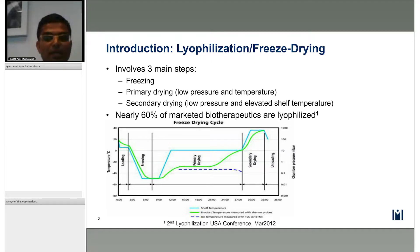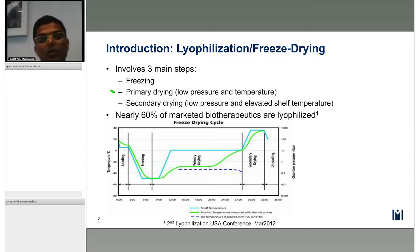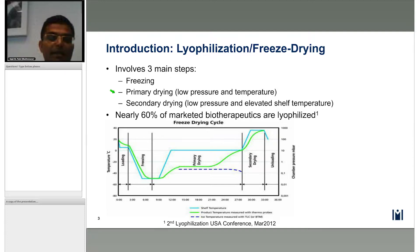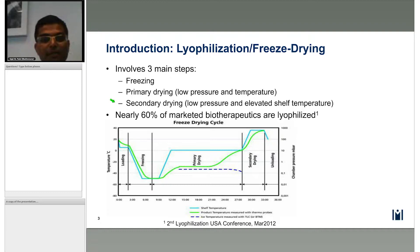Regarding lyophilization, also called freeze drying, it's typically carried out in three steps. It starts with the freezing step, where we convert water into ice. Then primary drying, where we remove the ice formed in the freezing step via sublimation under low temperature and pressure conditions. The last step is secondary drying, where we remove the unfrozen water — the water that did not freeze in the freezing step — via desorption.